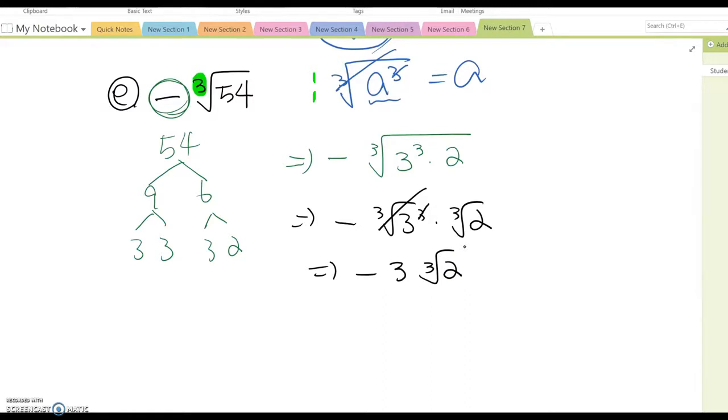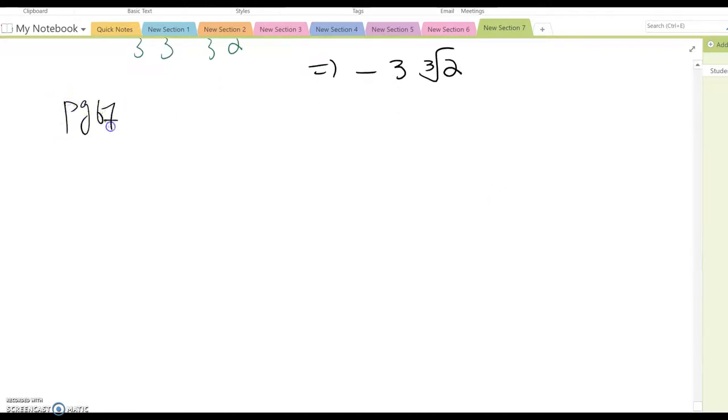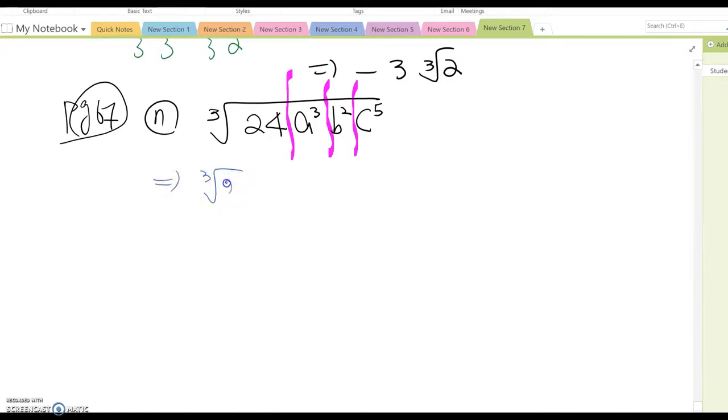Look at a more complicated problem: page 67, letter N, which is cubic root of 24 a cubed b squared c fifth. As you see, this has numbers A, B, and C. You can separate them and analyze separately. Cubic root 24, cubic root a cubed, cubic root b squared, cubic root c to the fifth.